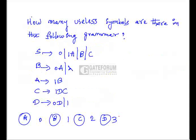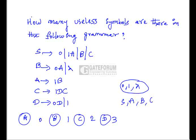How many useless symbols are there in the following grammar? The productions are: S → 0 | 1A | B | C, B → 0A | λ (where λ is epsilon, a string of length 0), A → 1B, C → 1DC, D → 0 | 1. The terminals are 0, 1, and lambda. The variables are S, A, B, C, and D. Among these we have to find the useless symbols.